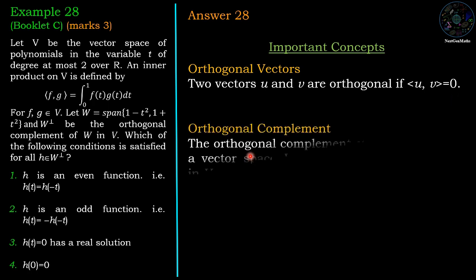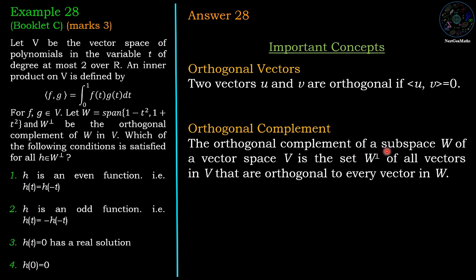Orthogonal complement: Orthogonal complement of a subspace W of a vector space V is the set W perp of all vectors in V that are orthogonal to every vector in W.